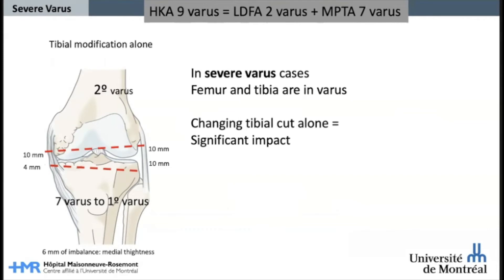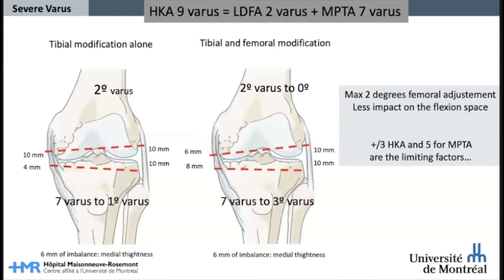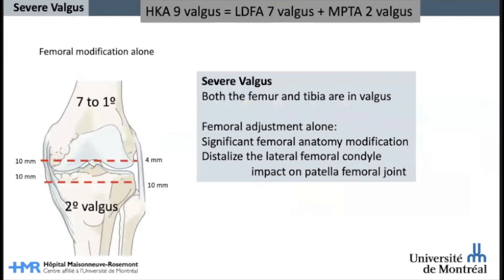In more severe varus cases, both the femur and the tibia are in varus. This is an example where the femur is in 2 degrees varus and the tibia is in 7 degrees. To reach the maximum HKA of 3 degrees by adjusting the tibial cut alone from 7 to 1, we will have a significant impact on the tibial anatomy and the flexion space. To avoid this significant tibial modification, I suggest to balance the adjustment. So if we bring down the femoral varus by 2 degrees, we can reduce the tibia varus from 7 to 3 degrees and be within our threshold of ±3 degrees of HKA.